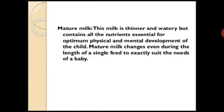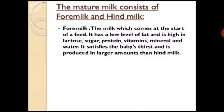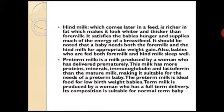Mature milk is thinner and watery but contains all the nutrients essential for optimum physical and mental development of the child. Mature milk changes even during the length of a single feed to exactly suit the needs of the baby. It consists of foremilk — the milk which comes at the start of the feed — and hindmilk, which comes later and is richer in fat, making it look whiter and thicker than foremilk. Pre-term milk is the milk produced by women who have delivered prematurely.